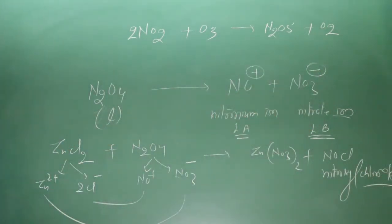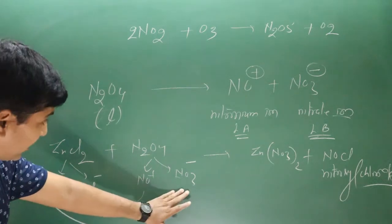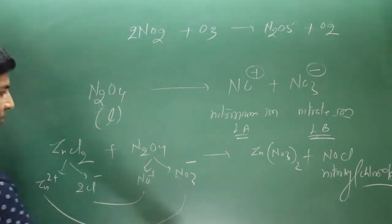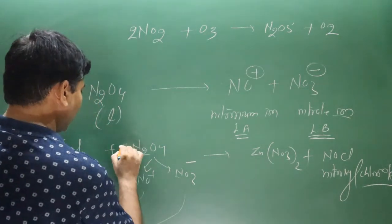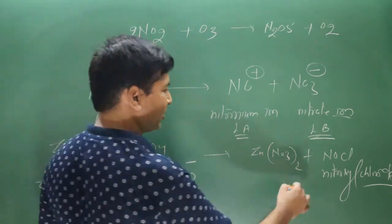Balancing: multiply by 2 to balance both nitrate and chloride. The balanced equation for ZnCl2 + 2N2O4 gives zinc nitrate and 2 NOCl. Equation is balanced.